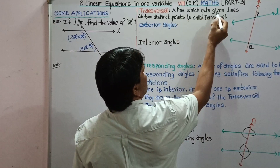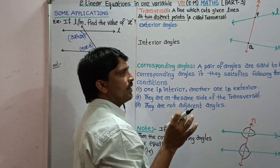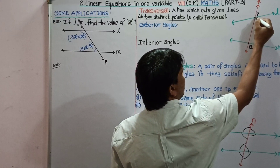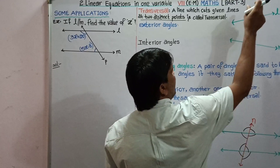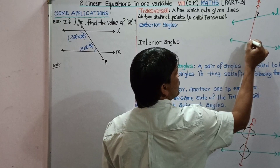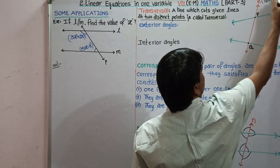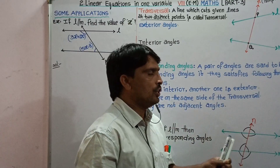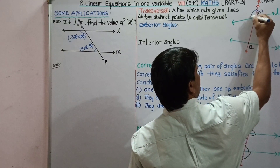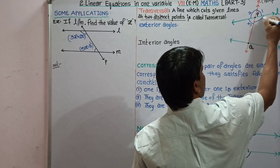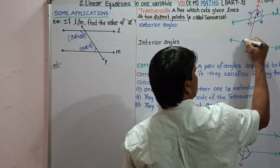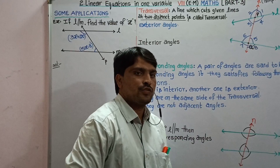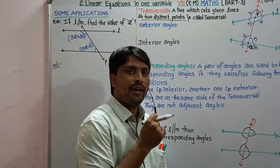A transversal is a line which cuts the given lines at two distinct points. Here we are given two lines L and M, and a line N cuts line L at P and line M at Q. So line N cuts L and M at two distinct points, therefore N is called a transversal. The angles made by the transversal with these two lines are labeled angle 1, angle 2, angle 3, angle 4, angle 5, angle 6, angle 7, and angle 8. When a transversal cuts two given lines, there are 8 angles formed.